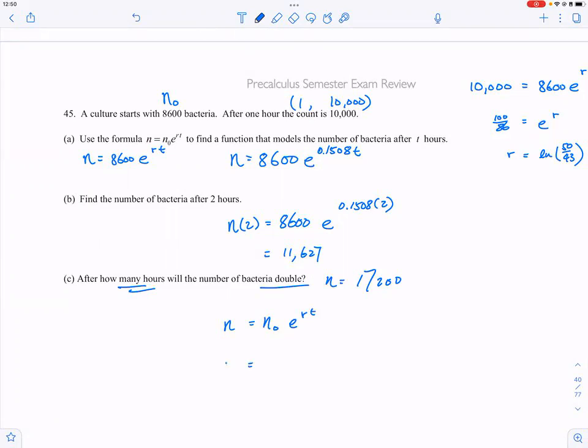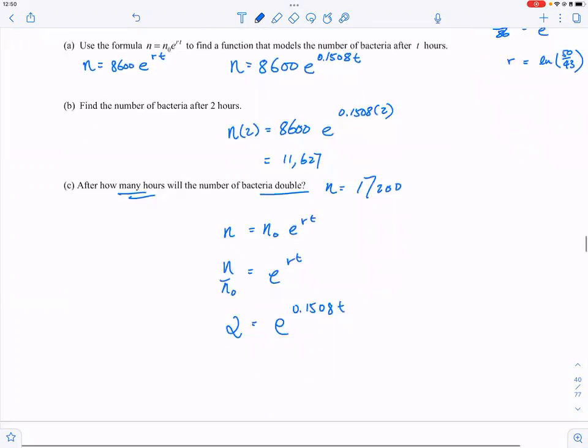So you say n over n₀ is basically 2, so n over n₀ equals e to the rt, and that will be 2, and e to the r, which we have 0.1508 times t. So we have natural log of 2 equals 0.1508 t, so t equals natural log of 2 over 0.1508.